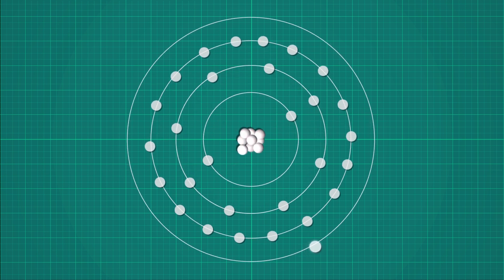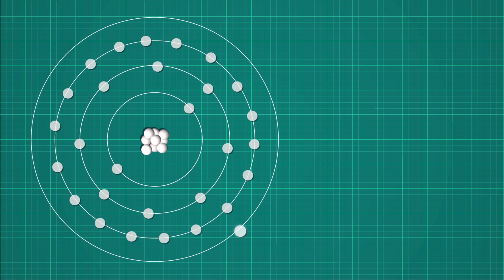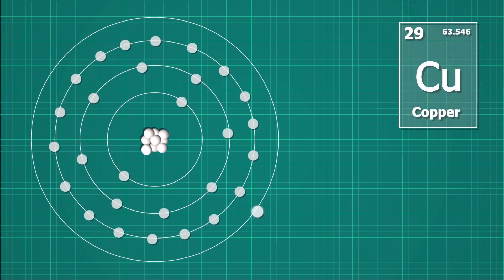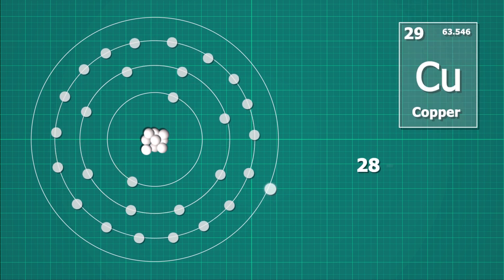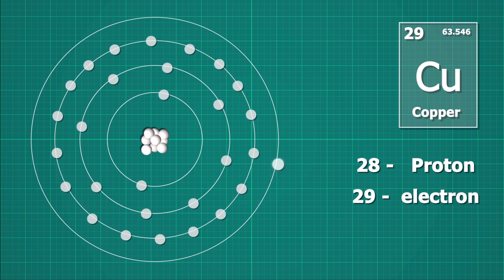Let's take a look at copper atom. Here is the model. Proton has positive charge and the electron has the negative charge which creates the force of attraction in between them. Copper has an atomic number 29, that is it contains 29 electrons and 28 protons.